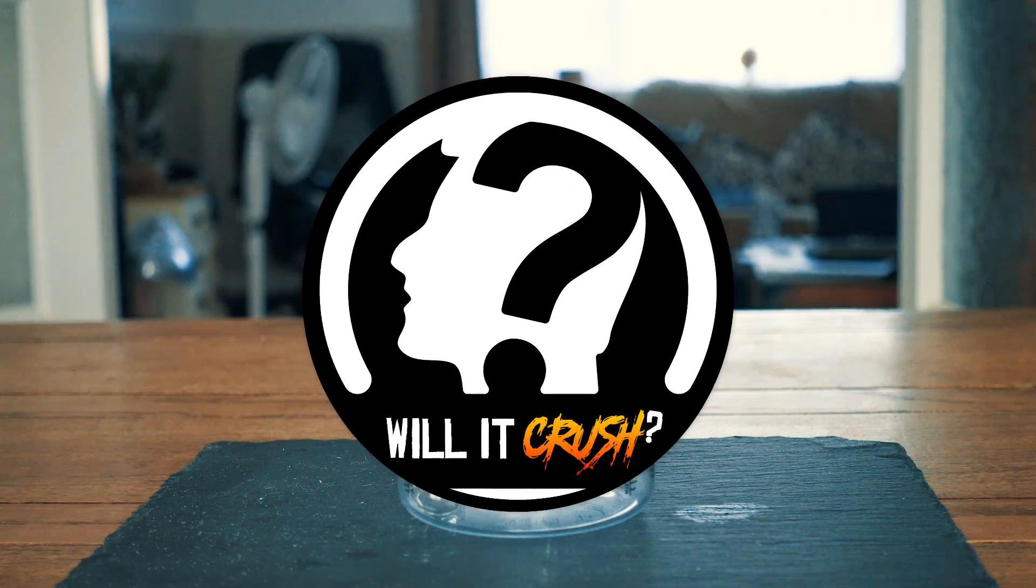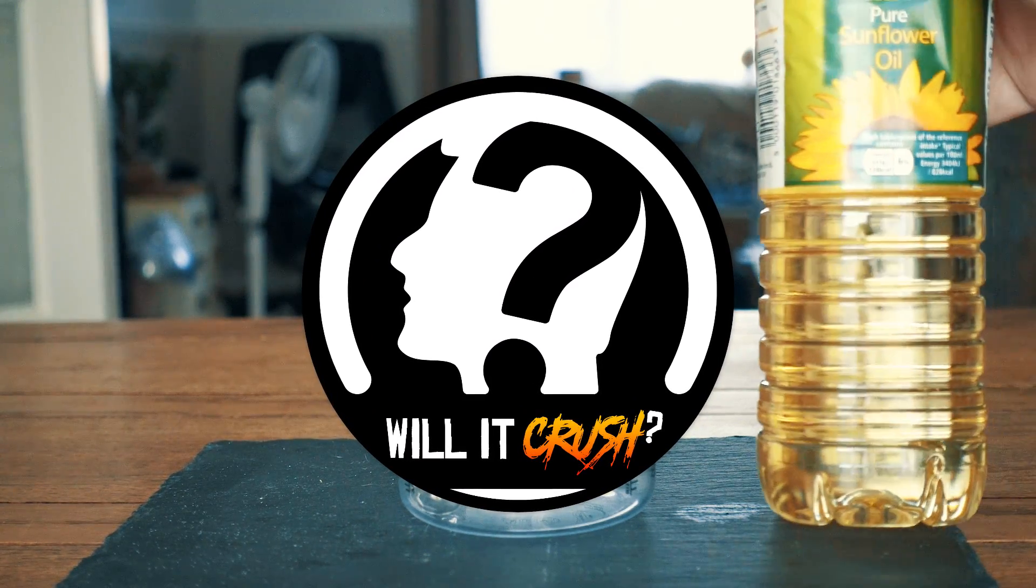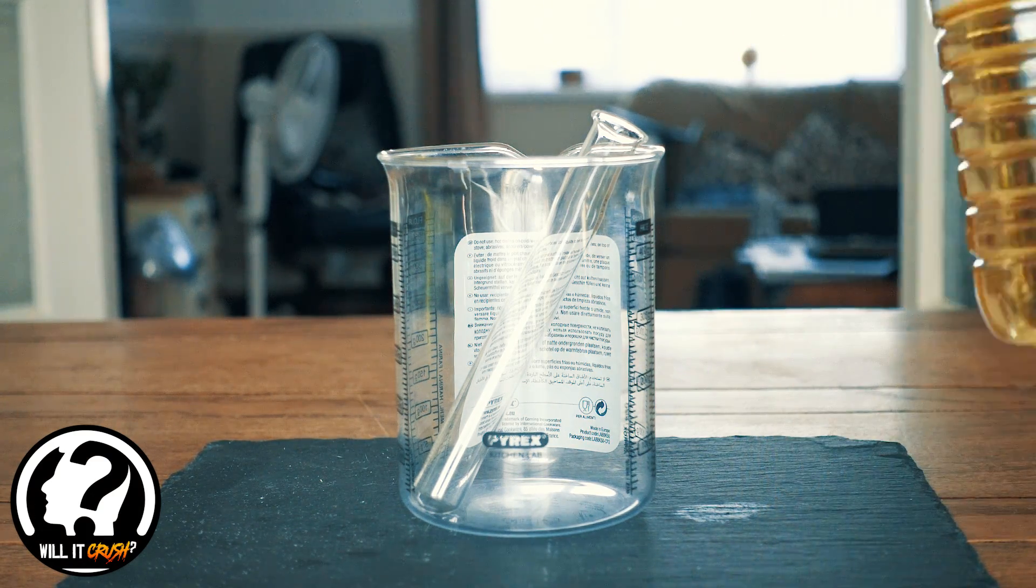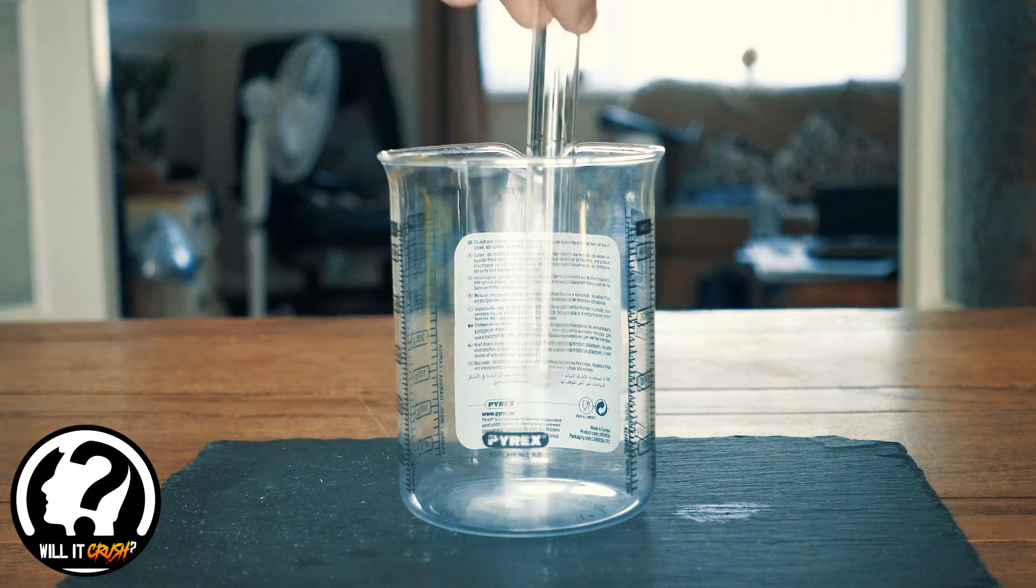Hi guys, welcome back to Will It Crush. In today's episode we're gonna be making things disappear, just using this sunflower oil and a pyrex test tube and pyrex beaker.